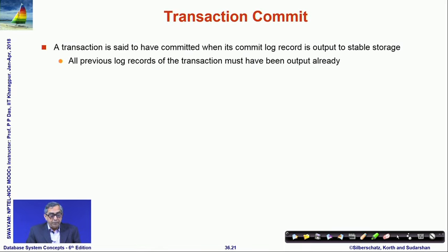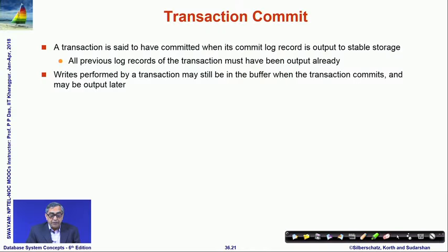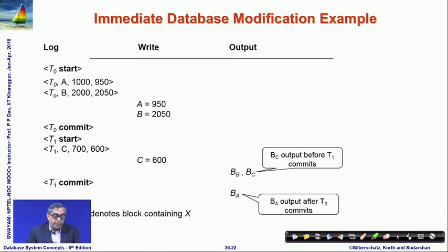Formally, a transaction is said to have committed when its commit log record [Ti commit] is output to stable storage. All previous log records of the transaction must have been output already. The actual writes performed by the transaction may still be in the buffer when the transaction commits and may be output at a later point in time.